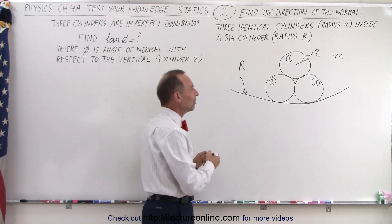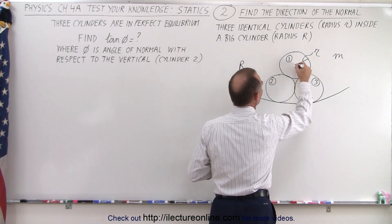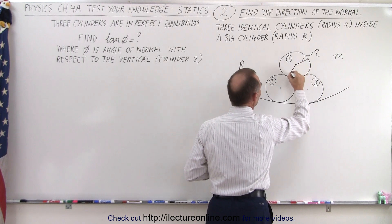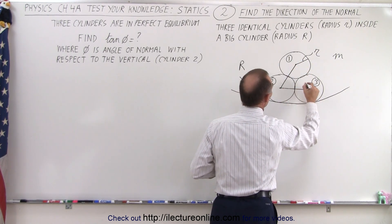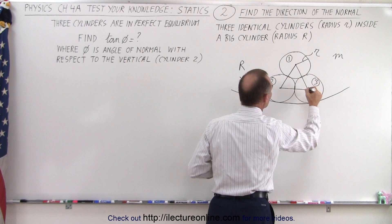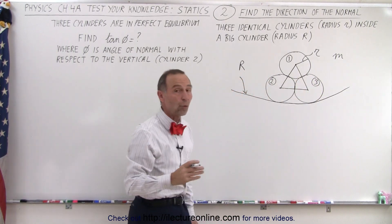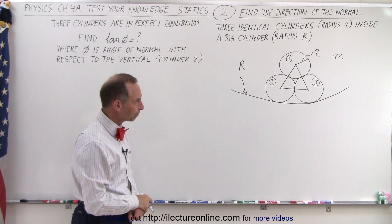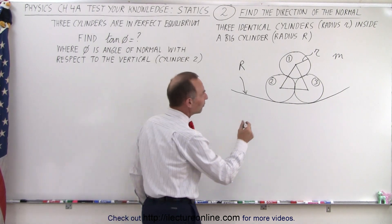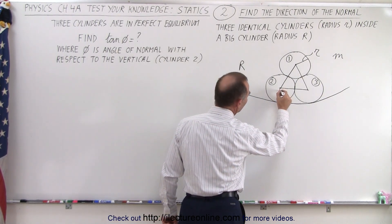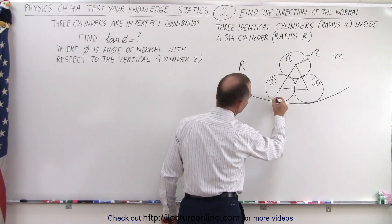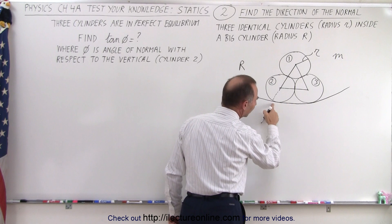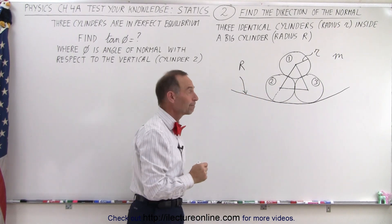The first thing we want to do is find the centers of the three cylinders. There's one, there's two, there's three. Then if we connect those with three lines, we have ourselves an equilateral triangle, where each side is equal to twice the radius of one of those small cylinders. Now notice that if we were to continue this line all the way through, the bottom cylinder does not touch the big cylinder here right at that spot.